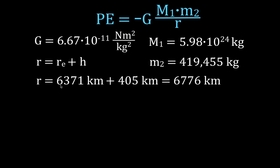In this case, the radius of the Earth is 6,371 kilometers. The height above the Earth's surface for the space station is 405 kilometers. We add that together, and we get the value for r is 6,776 kilometers.